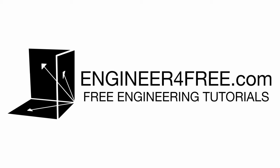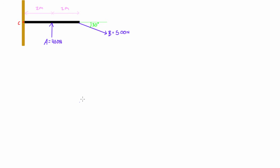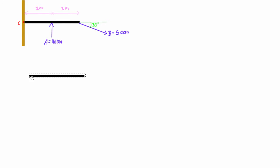Hey guys, welcome back. In this video I'm just going to introduce the concept of reaction forces for 2D statics problems. So here we have a beam, this black beam, and it's fixed with a rigid connection to this wall. This wall is not going anywhere, it's totally fixed. And then we're applying some forces here. So let's start off by drawing our free body diagram of the beam, just considering the external blue forces here and not worrying about the reaction force yet because we actually haven't introduced that concept yet.